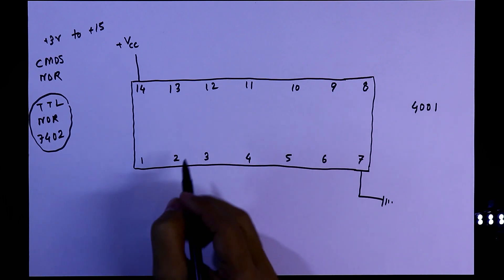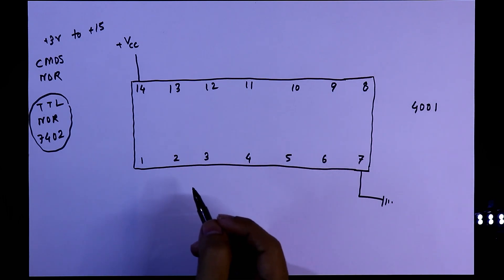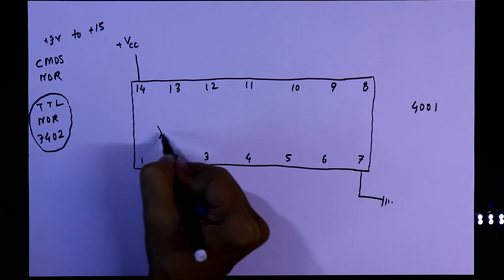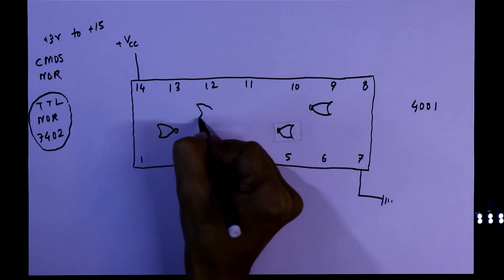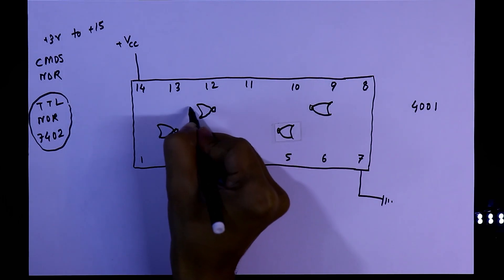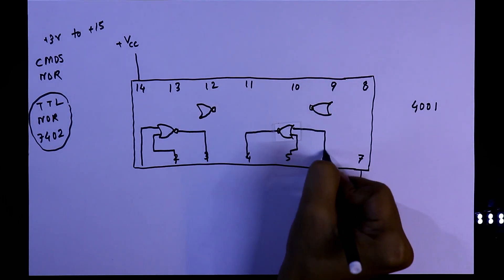Now see this IC. It has 4 NOR gates, NOR gate 1 and NOR gate 4. The pin diagram is like this.